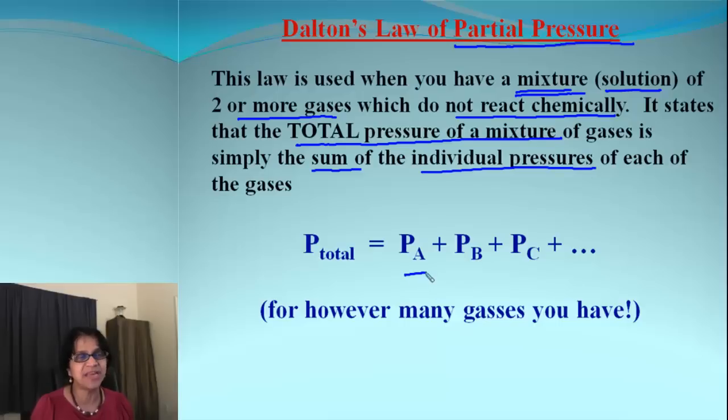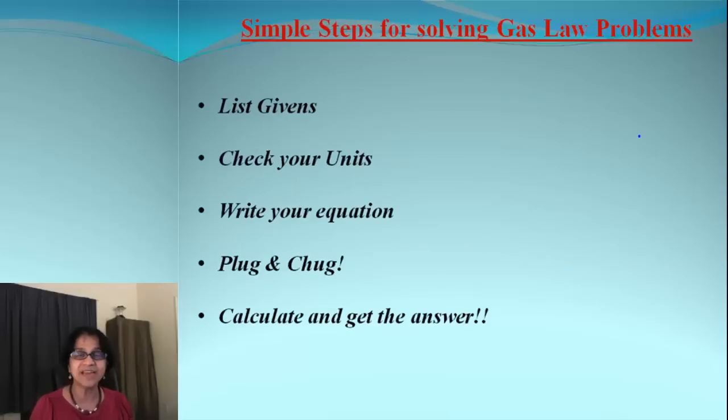So, let's say maybe we have Pa, Pb and Pc are the pressures due to each gas A, B and C. The total pressure is simply the sum of all the pressures Pa, Pb and Pc.